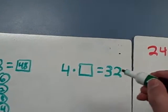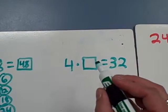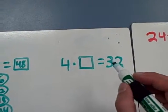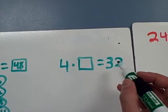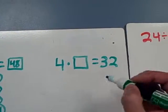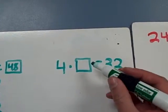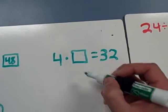Let's try this one. This time, you've been given a factor, and you're missing another factor, and you've got the product. Four times something equals 32, or four groups of something equals 32.